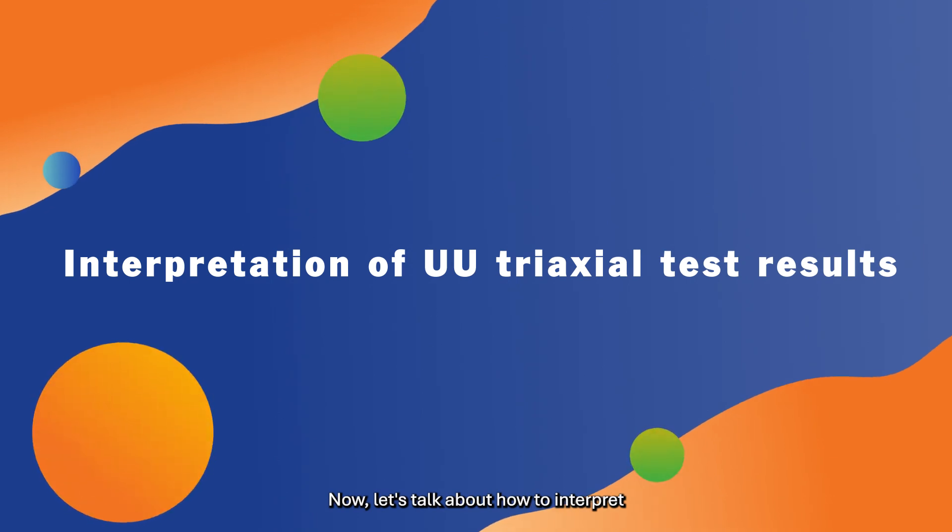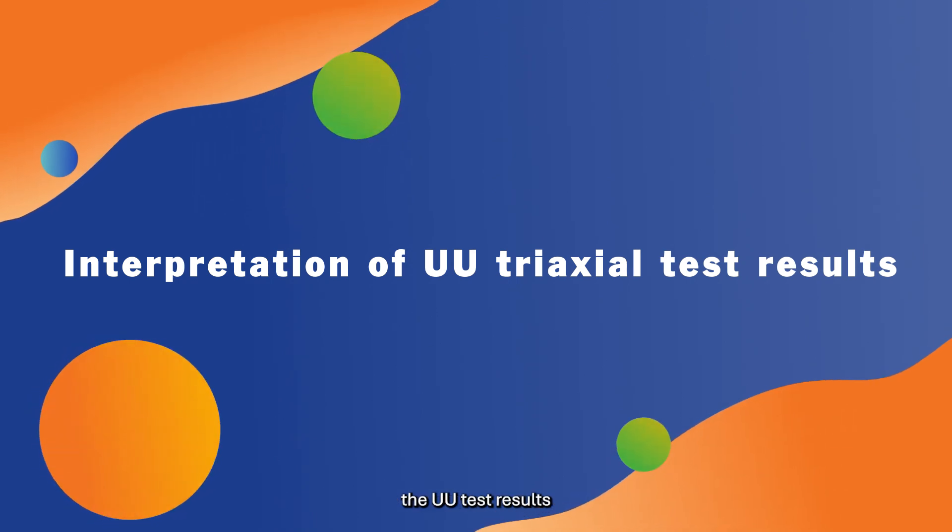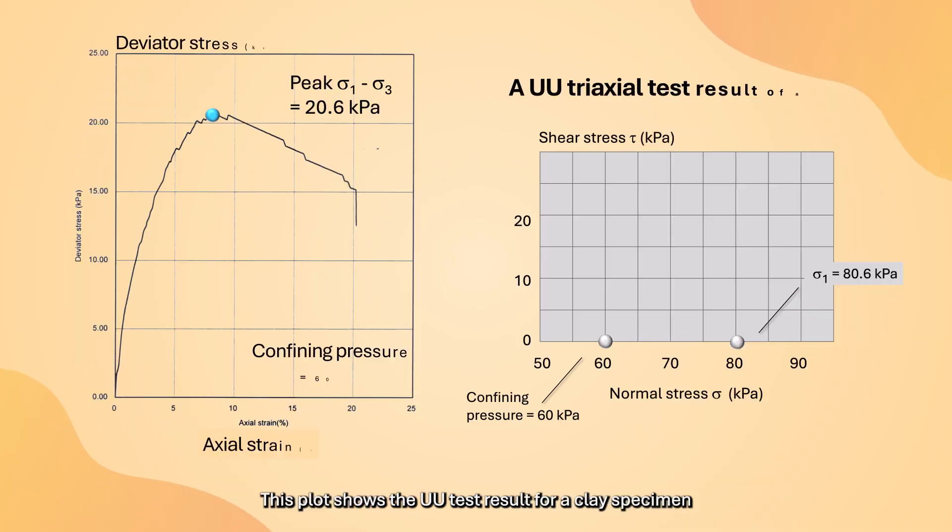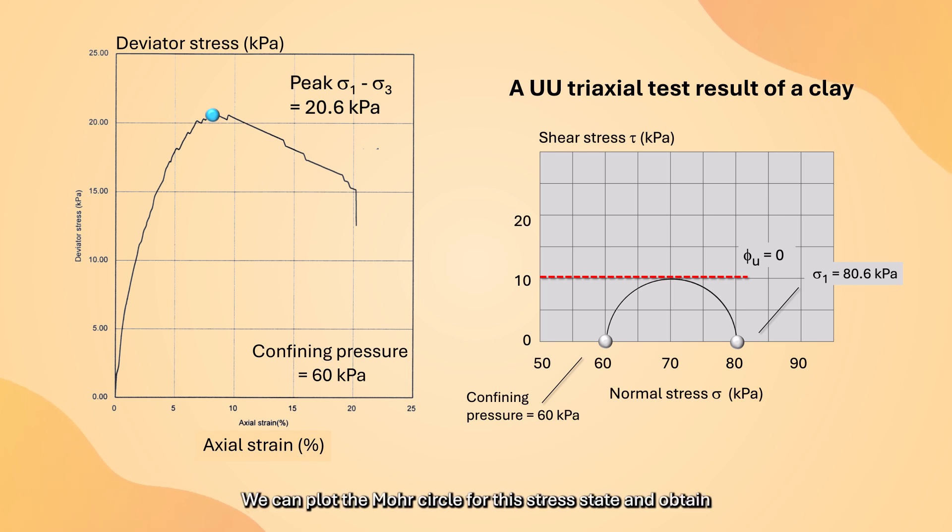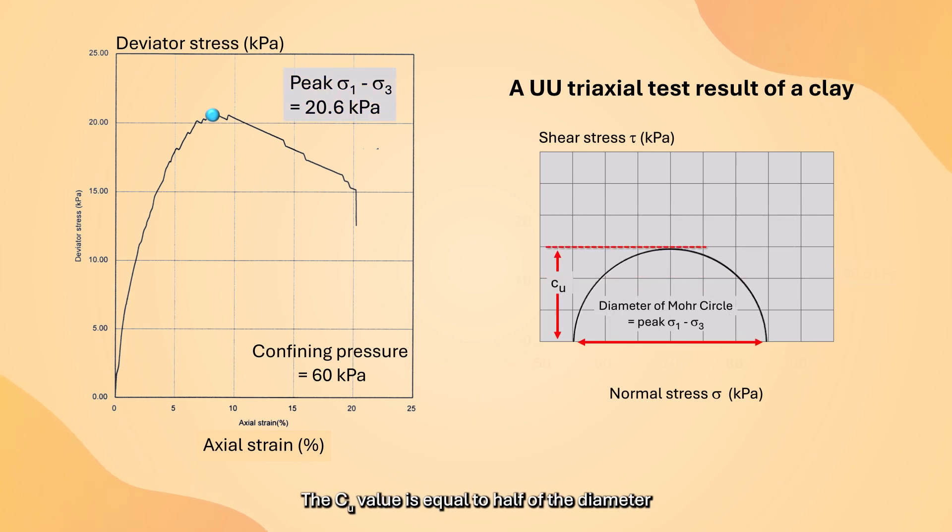Now, let's talk about how to interpret the UU test result. This plot shows the UU test result for a clay specimen. The peak deviator stress is 20.6 kPa and the confining pressure is 60 kPa. We can plot the Mohr circle for this stress state and obtain the specimen's undrained shear strength Cu by drawing a horizontal line. The Cu value is equal to half of the diameter of the Mohr circle, which is also one half of the peak deviator stress.